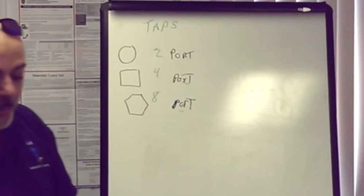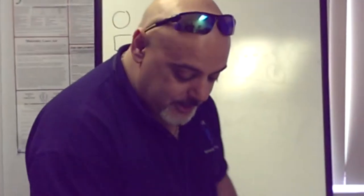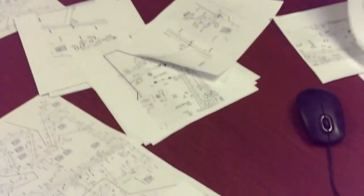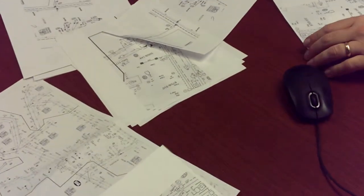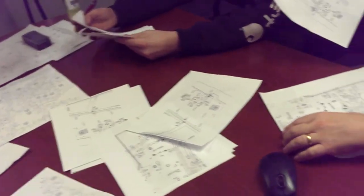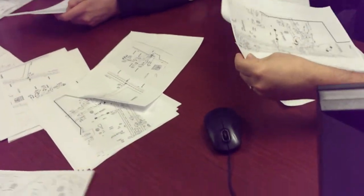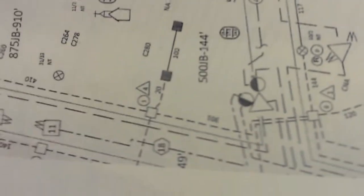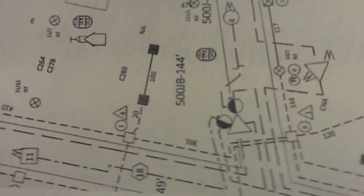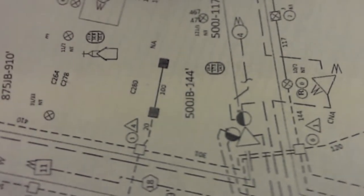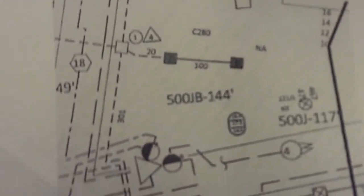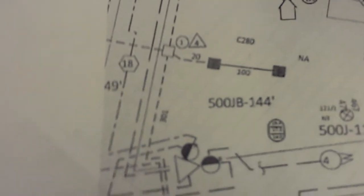Look at your print and you can actually see these. If you look on your print, for the one that's over by pole number three on East Street — if you look in the middle of the street there's some cable that goes to a circle with a four in it. What does that tell me? Two-port. Anybody know what the four stands for?